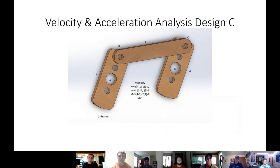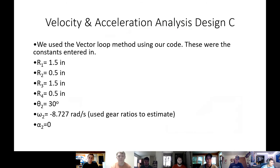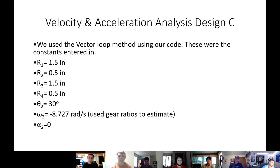Here is the 4 bar for Design C. Here are the given geometric values that we used. The similar or the same omega as A. And then these are the velocity and acceleration outputs after putting them in the code.